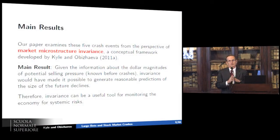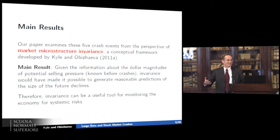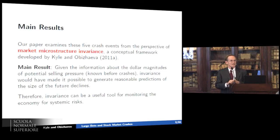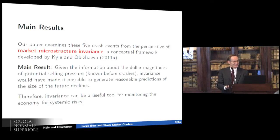Our main result is that given information about the dollar magnitudes of potential selling pressure — which was known before these crashes occurred — our model can predict the outcomes. In the two cases of many people following the same strategies, these were discussed in newspapers and at conferences. When the 1987 crash occurred, there was a conference where the possibility was being debated. In fact, the SEC did a study of potential stock market crash risk almost a year before 1987 occurred. They collected the numbers, painted an accurate scenario they called the 'cascade scenario' — but at the end said Wall Street told them it wouldn't happen.